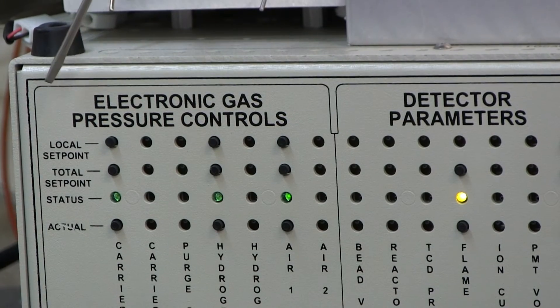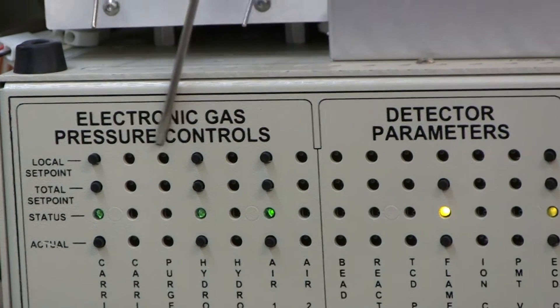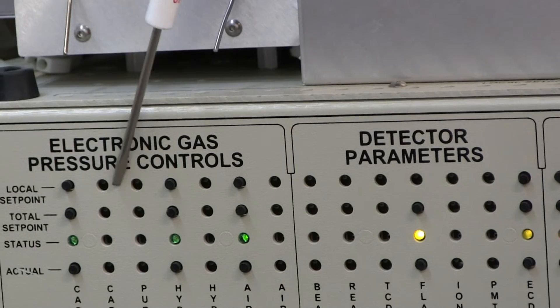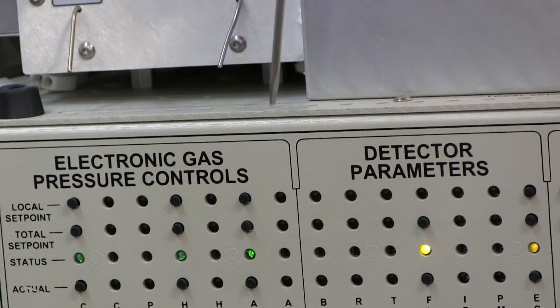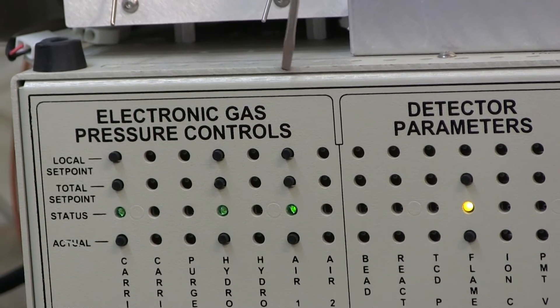The front panel is organized by all the gases in this section here. We can have up to 7 different gases controlled by the screwdriver adjustment to whatever pressure you'd like.